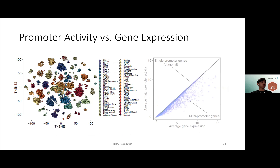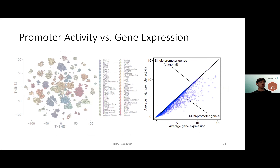We also found that promoter activity is dominated by tissue and cell type. On the left is a t-SNE plot using the top 1500 promoters with the highest variance in promoter activity, and the tissue types cluster quite well together. We can also look at the contribution of each promoter to overall gene expression. The figure on the right shows the comparison between major promoter activity on the vertical axis, representing the most active promoter of each gene, compared to the average gene expression, which is the sum of all promoter activity estimates for a particular gene. On the diagonal lies all the single promoter genes, while multi-promoter genes lie to the right of the diagonal. This plot clearly shows that a single promoter often doesn't fully explain gene expression, and we also have to consider minor promoters as they contribute to isoform diversity.